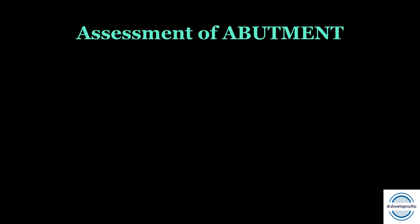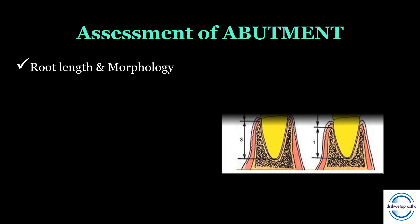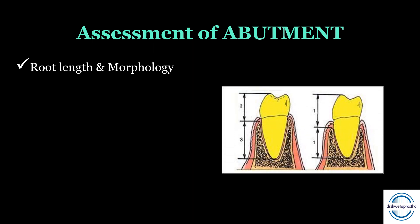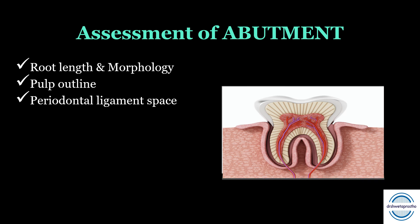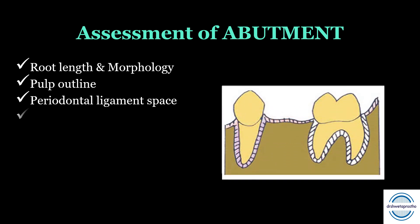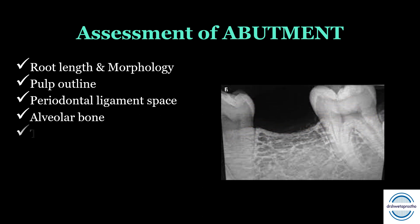Whenever we are planning for a fixed prosthesis, a thorough assessment of the abutment tooth is very important before proceeding with tooth preparation. The points we have to evaluate are: first, the root length and morphology of the planned abutment; the pulpal outline; the periodontal ligament space around the planned abutments; the alveolar bone present; and the tilt or parallelism of the abutments.